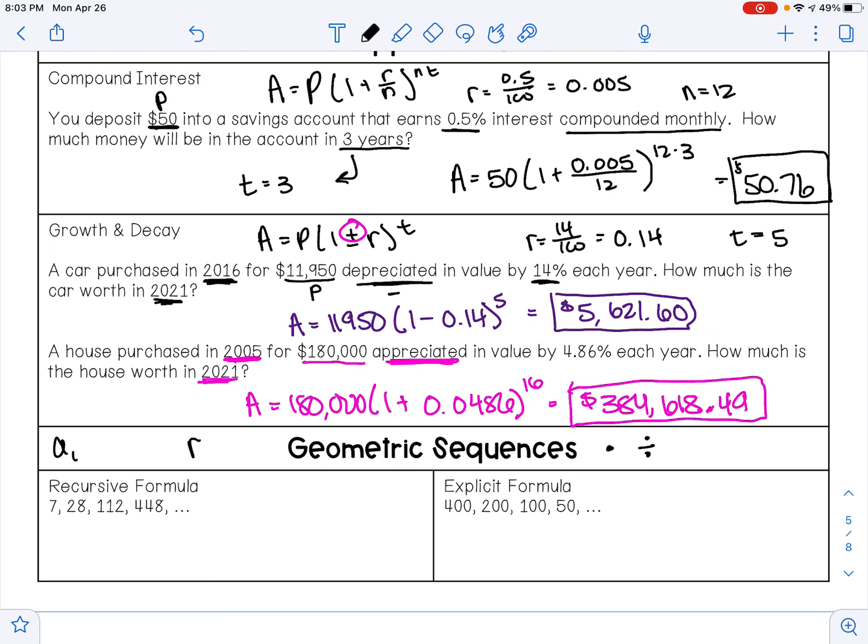The recursive formula for a geometric sequence is a sub n equals a sub (n minus 1) times r, where the first term is given. And the explicit formula for a geometric sequence is a sub n equals a sub 1 times r to the (n minus 1) power.